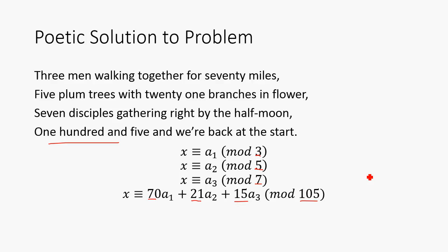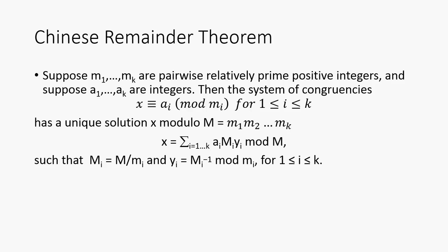Let's see how we figure this out in a sort of algebraic manner. So suppose m1 through mk are pairwise relatively prime integers, and suppose that a1 through ak are integers, then we're going to define a system of congruences such that this is true. So m is going to be the moduli, and a sub i is going to be the constants that we're going to be solving our system for.